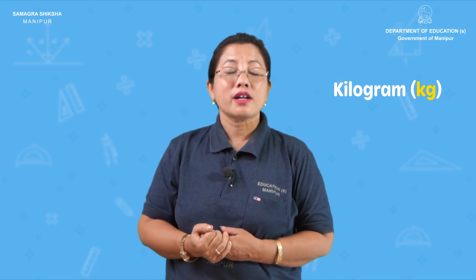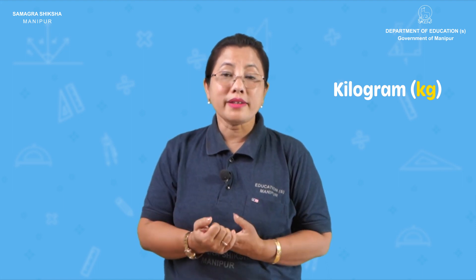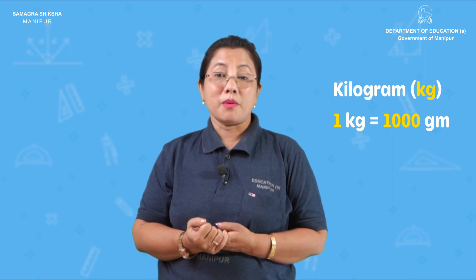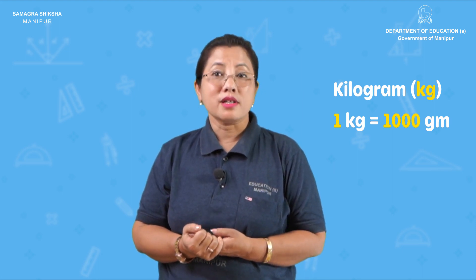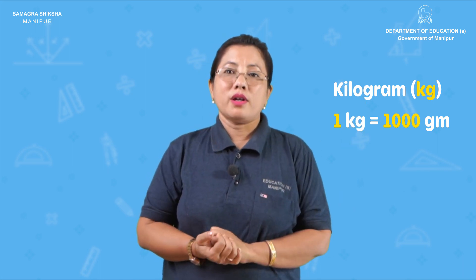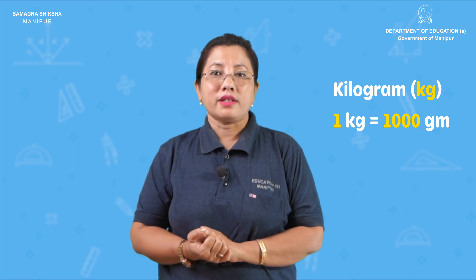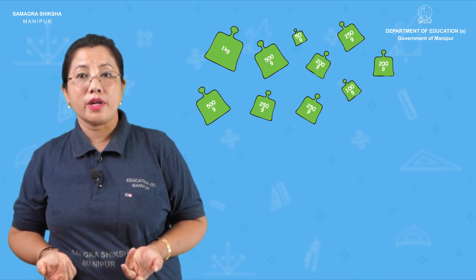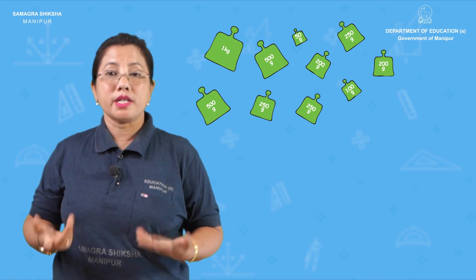One kilogram equals 1,000 grams. We use a balance with weights such as 250 grams, then 500 grams, and then 250 grams.